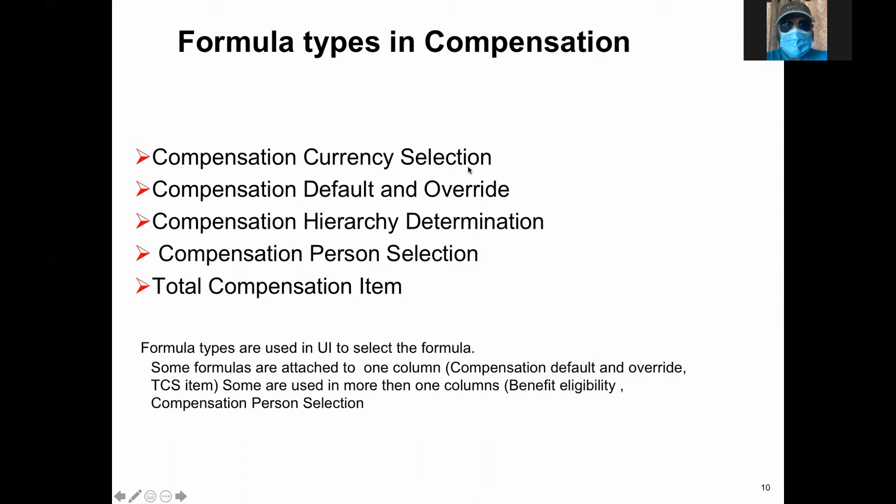Whenever you select a currency, the currency selection formula type is used. Default override — when you define a value column, you can override that value by using a default. This is hierarchy determination. Person selection is used in two — actually three places. One is in the compensation process, another is the total compensation statement, and the third is also within the process where person selection is used.